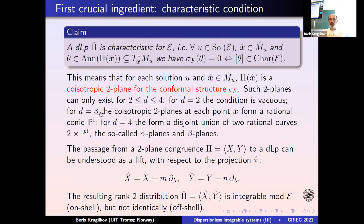So at each point x, that's precisely a congruence of planes. For d=4, we actually have two rational lines — two different families. These planes are called alpha and beta planes, and they can be swapped if you change orientation.